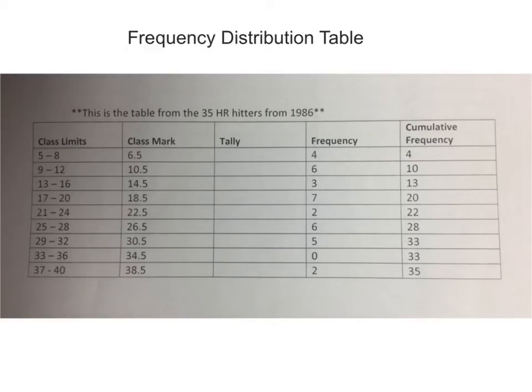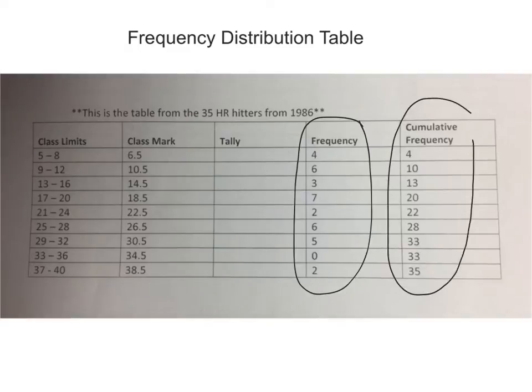Looking at the frequency distribution table that we made in our example yesterday, we're still looking at the 1986 home run hitters. We filled this entire table in before coming up with our frequencies and cumulative frequencies and of course our class limits and our class marks.